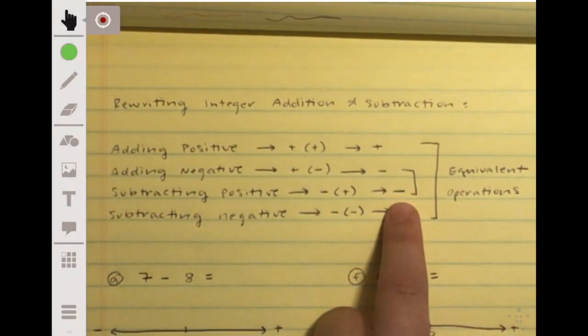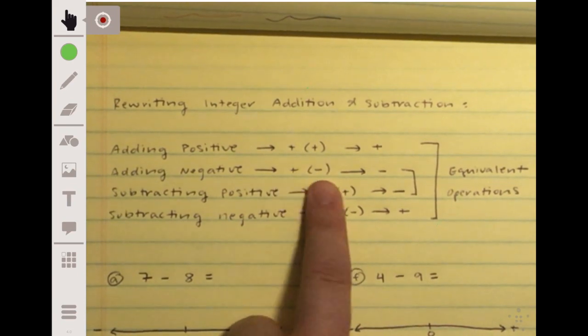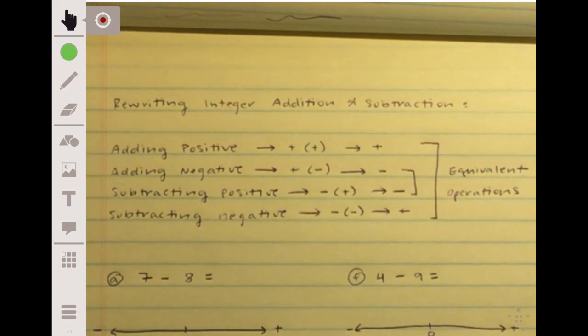So you can think of adding a negative and subtracting a positive as equivalent operations, they both are basically subtraction. And that's where people get thrown off. It's like, oh, there's a plus sign there. Well, yeah, but if you're adding a negative, it acts the same as subtraction. If you're subtracting a positive, it acts the same as subtraction.